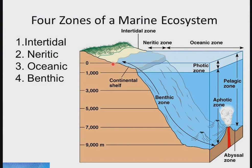We have four major ecological zones: the first is the intertidal zone, we have the neritic zone, we have the oceanic zone, and we have the benthic zone. The intertidal zone is also called the euphotic zone.